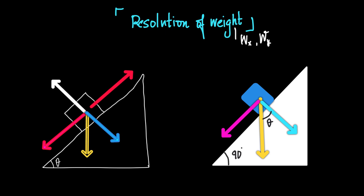This weight mg can be resolved into two components: one is mgx, the horizontal component parallel to the plane, and the other is mgy, the vertical component perpendicular to the plane. This angle here is 90 degrees, and these two lines are parallel.